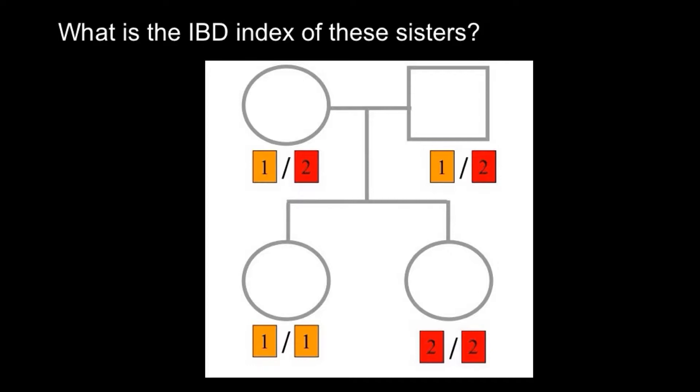IBD stands for identical by descent, and the index can be one of three values: 0, 1, and 2. Just these three values because we compare loci of two people.